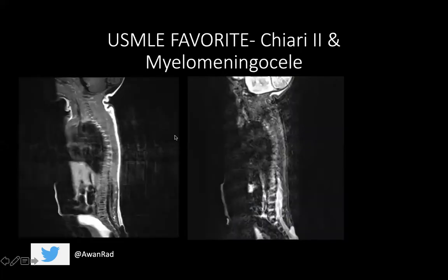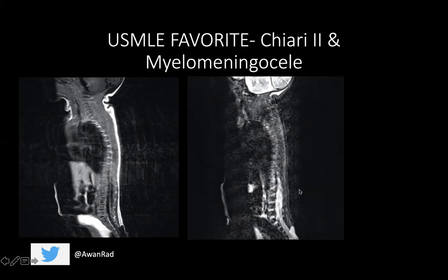A very high yield USMLE favorite is the association between Chiari 2 and a myelomeningocele. Myelomeningocele means there has been herniation of meninges and neural tissue through a defect in the spine. On this T1-weighted image, the CSF is dark and spinal tissue is gray; on the T2-weighted image, the CSF is bright. Inferiorly, you have CSF or meningeal tissue and neural tissue in the form of cauda equina nerve roots herniating through a defect, covered by skin — this is myelomeningocele. This is a high yield association with Chiari 2. Spinal dysraphism is not an element of a Chiari 1 malformation.